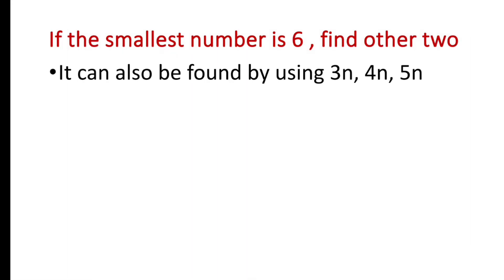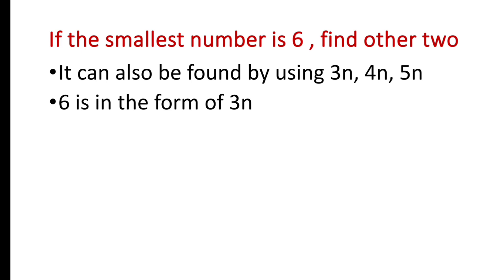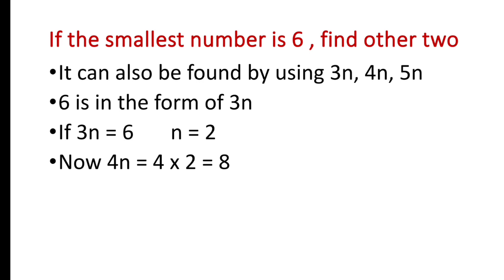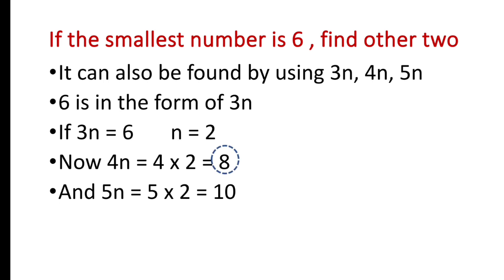Another way: using 3n, 4n, 5n. We can take 6 as 3n (we cannot take 6 as 4n or 5n because 6 is not a multiple of 4 or 5). Setting 3n = 6 gives n = 2, so 4n = 8 and 5n = 10. Therefore 8 and 10 are the other two numbers, confirming the triplet 6, 8, 10.